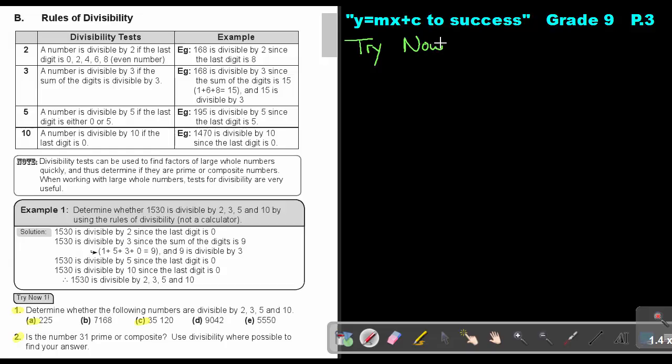We are at try now, number 1. Let's start with number 1A. It's 225. If I look, is it divisible by 2? No, because it's ending on an odd number, so it's not divisible by 2. If I look if it's divisible by 3, I can say it's 2 plus 2 plus 5, and that will give me 9. So it's divisible by 3. Is it divisible by 5? Yes, because the last digit is 5, so it's also divisible by 5. Will it be divisible by 10? No, because the last digit is not 0. So it's only divisible by 3 and 5.